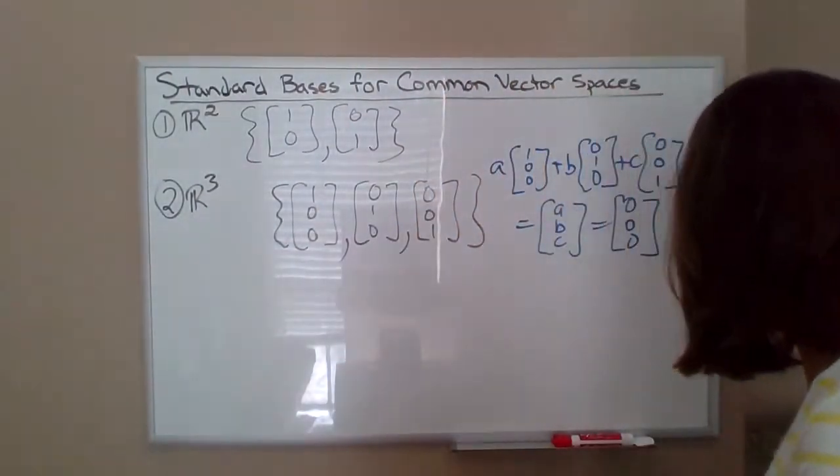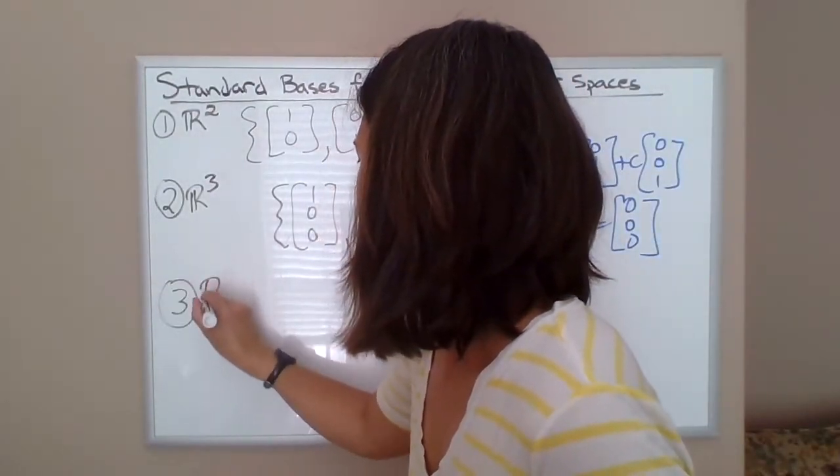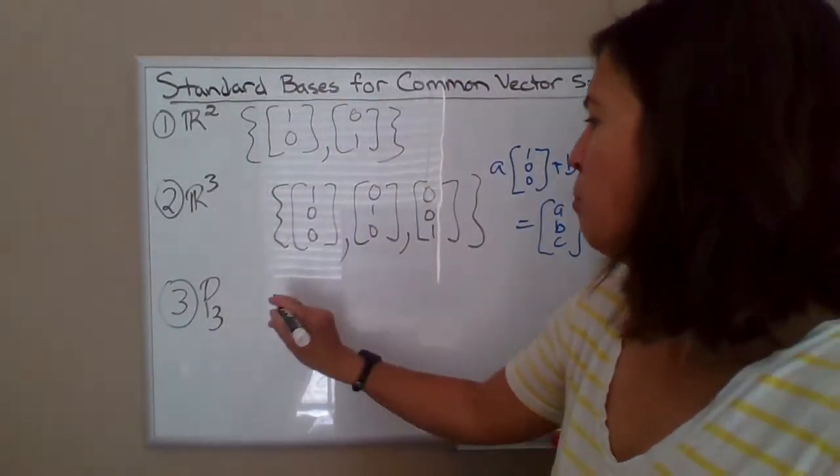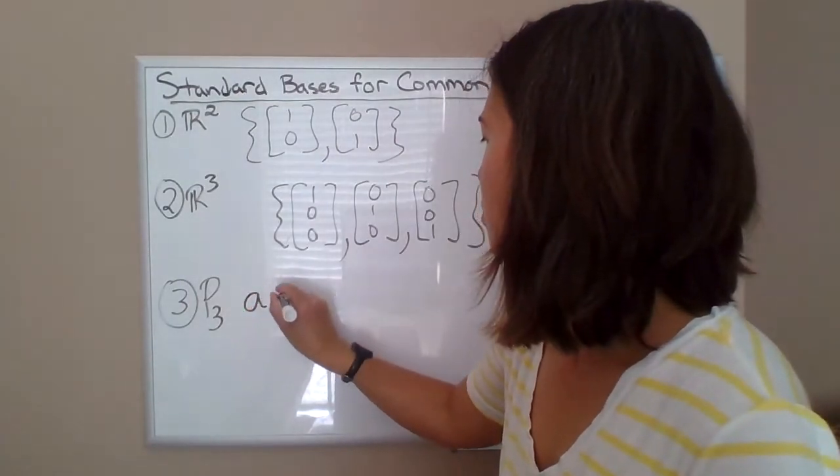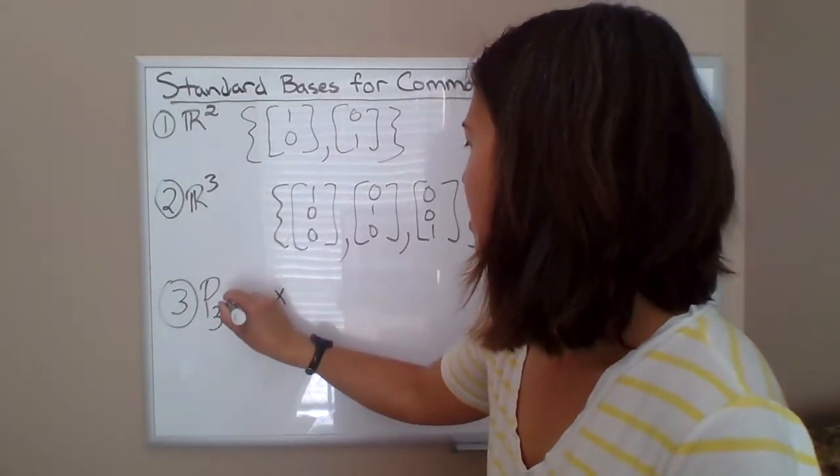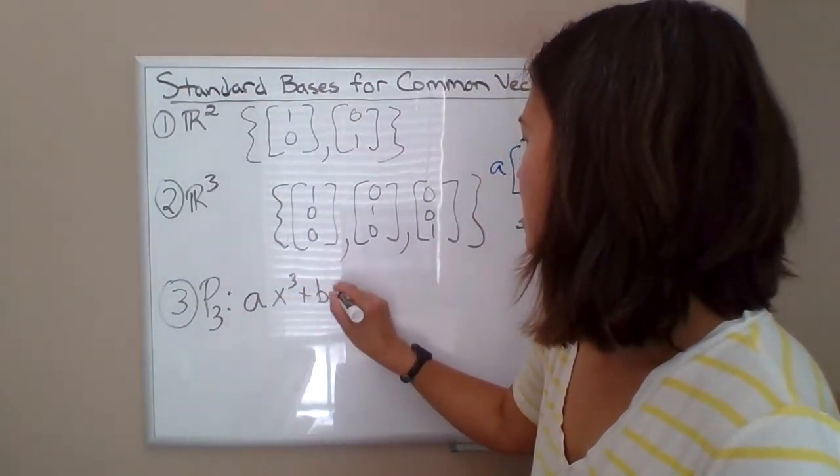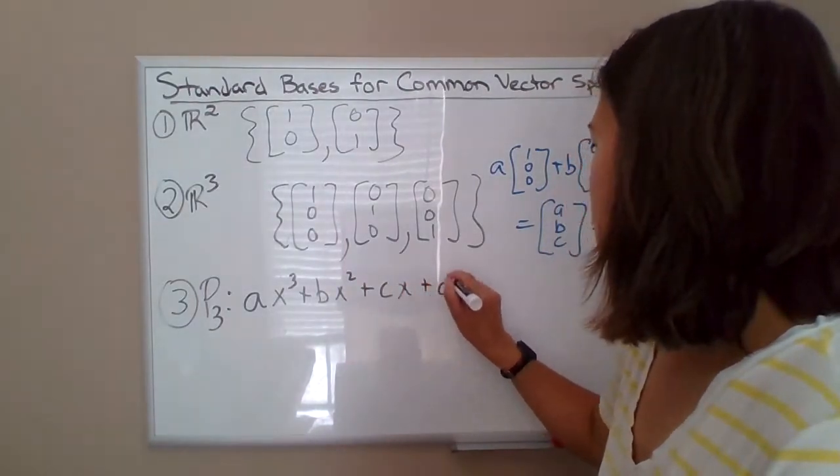How about, let's say, P³. So P³ is a collection of all polynomials degree three or lower. So you can have some number, let's say, A times X cubed plus some number B times X squared, and you get the idea, C times X plus a constant D.